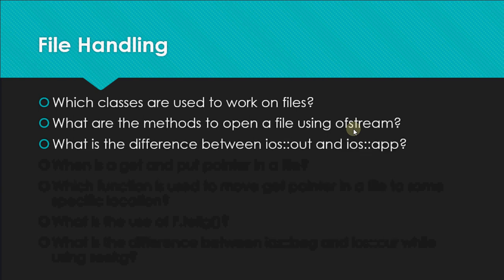What is the difference between ios::out and ios::app? ios stands for input-output system; these are file opening modes. ios::out opens the file for writing but clears all previous contents — you get a blank file to start with. ios::app is the append mode: whatever was in the file remains, and you can add more content to it.